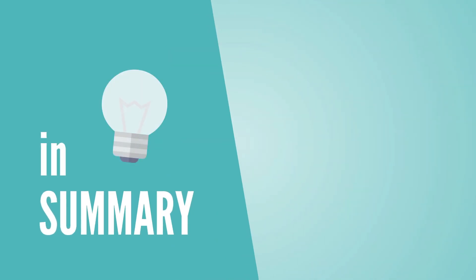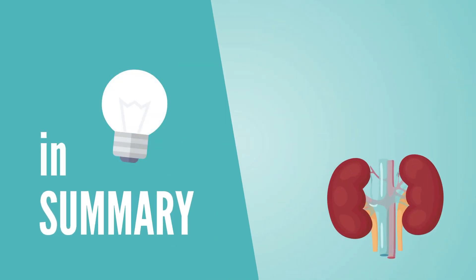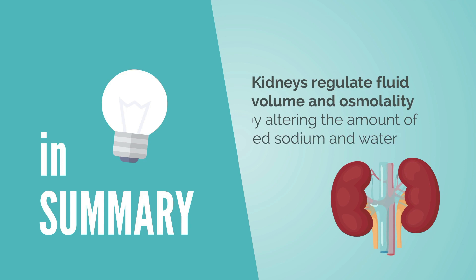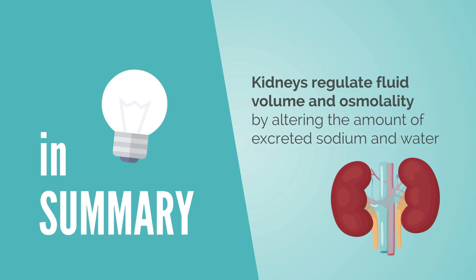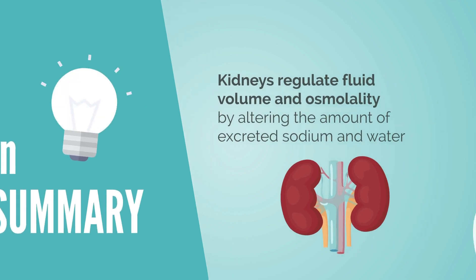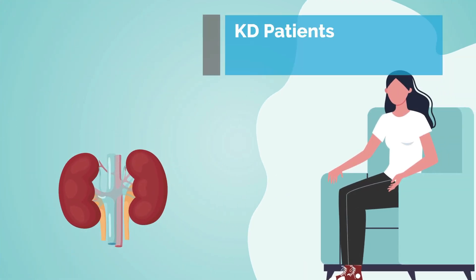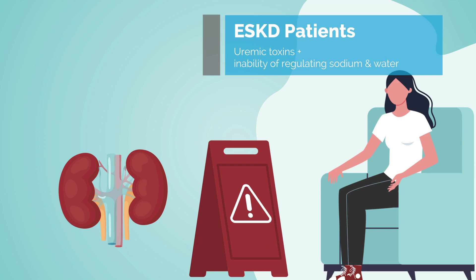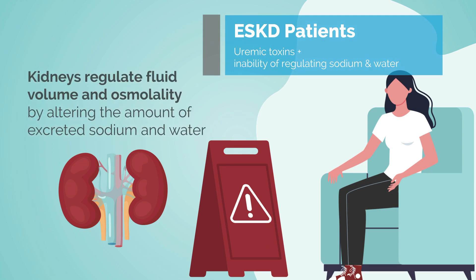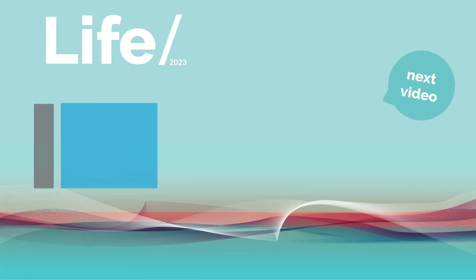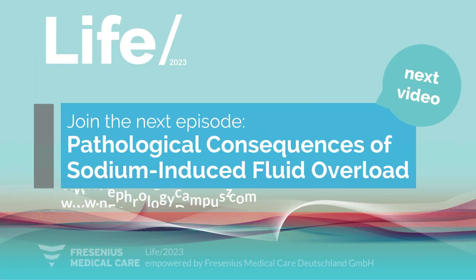In summary, based on neural and endocrine input, kidneys regulate fluid volume and osmolality by altering the amount of excreted sodium and water. Therefore, not only uremic toxins but also the inability of regulating the inorganic sodium and water in end-stage kidney disease patients imposes detrimental health effects, which will be addressed in the next video. Thank you.